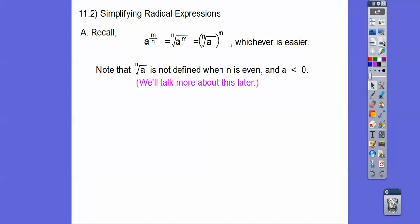Remember from the last lesson and from IM-2, a to the m over n power equals the nth root (this is the denominator) times a to the m, or the nth root of a all to the n power, whichever is easiest. So typically I use this one right here. And just keep in mind that if this is an even root right there, this has to be greater than or equal to zero, because we can't square root a negative number.